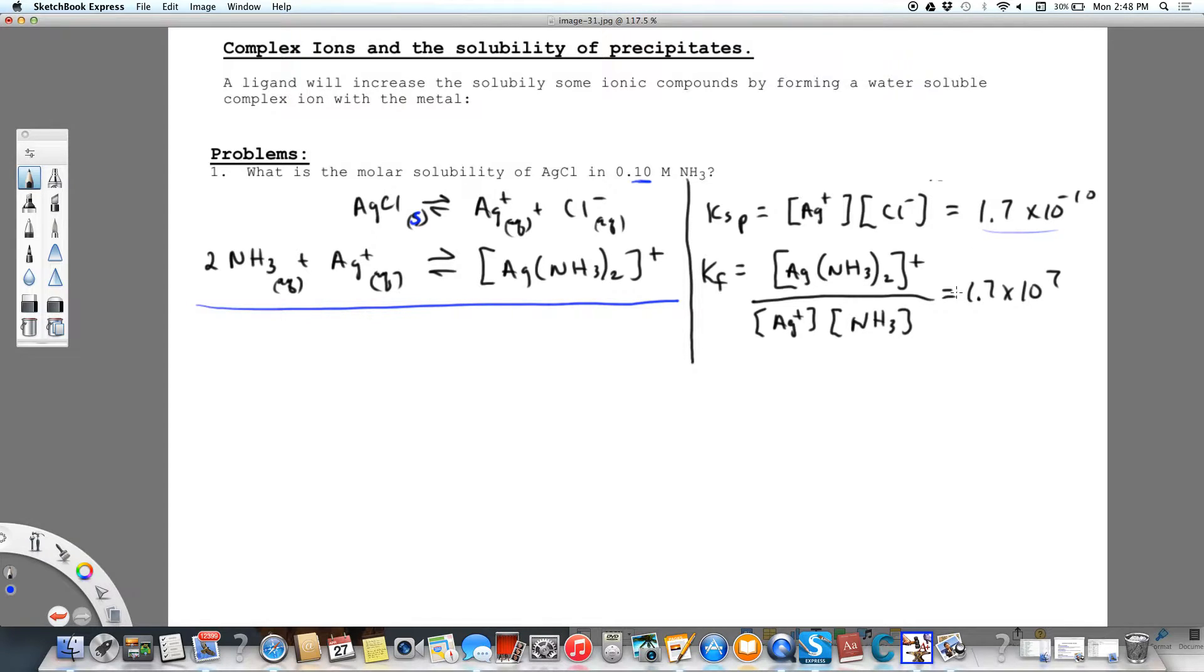So first, if I add these two equations together, we see that the silver is on both sides so it cancels out. And we have silver chloride plus two ammonia, this is a solid, this is aqueous, produces our complex, which is aqueous, plus aqueous chloride.